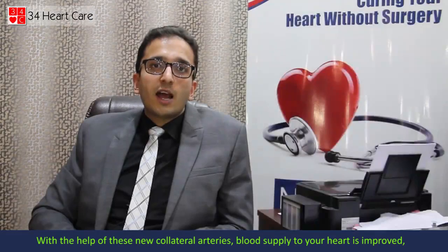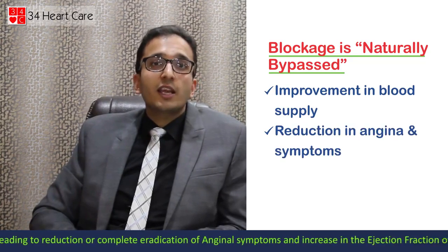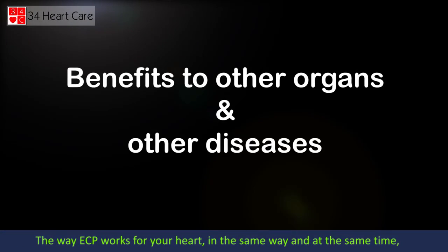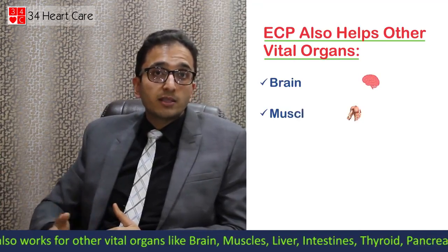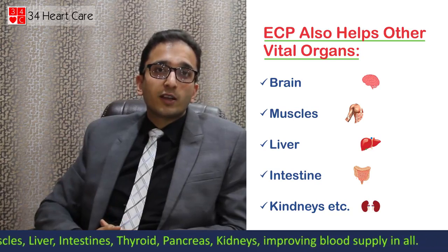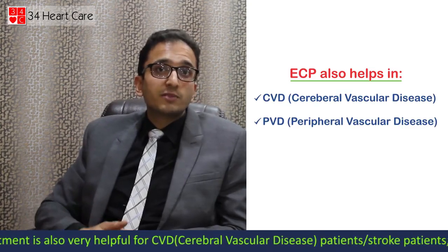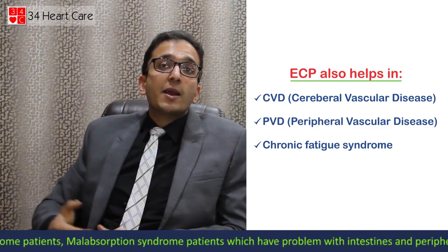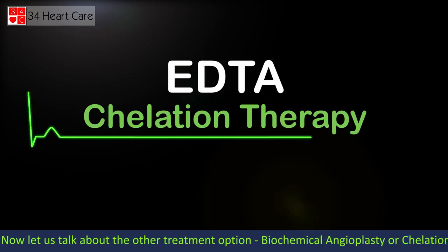With the help of these new collateral arteries, blood supply to your heart is improved, leading to reduction or complete eradication of anginal symptoms and an increase in the ejection fraction of the heart. The way ECP works for your heart, in the same way and at the same time, it also works for other vital organs like the brain, muscles, liver, intestines, thyroid, pancreas, and kidneys, improving blood supply to all. Thus, this treatment is also very helpful for cerebral vascular disease patients, stroke patients, chronic fatigue syndrome patients, malabsorption syndrome patients, and peripheral vascular disease patients.